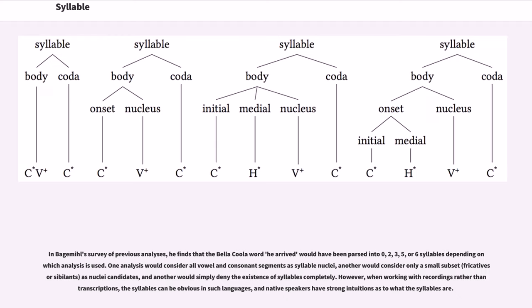Other examples: in one survey of previous analyses, he finds that the Bella Coola word he arrived would have been parsed into zero, two, three, five, or six syllables depending on which analysis is used. One analysis would consider all vowel and consonant segments as syllable nuclei, another would consider only a small subset as nuclei candidates, and another would simply deny the existence of syllables completely. However, when working with recordings rather than transcriptions, the syllables can be obvious in such languages, and native speakers have strong intuitions as to what the syllables are.